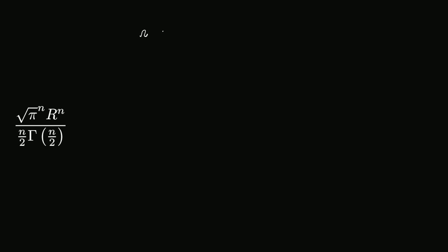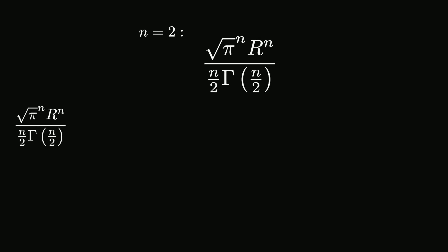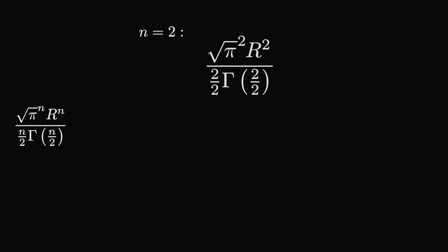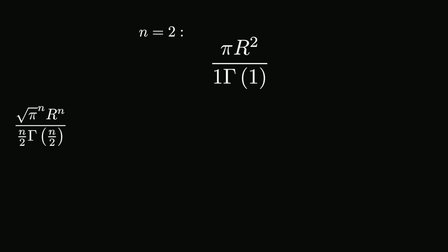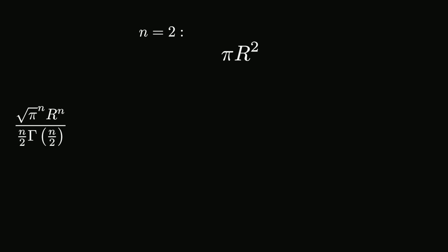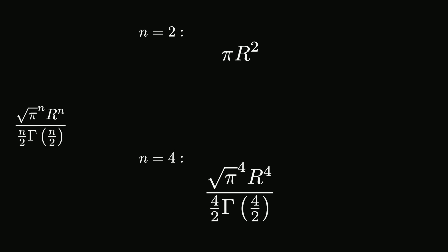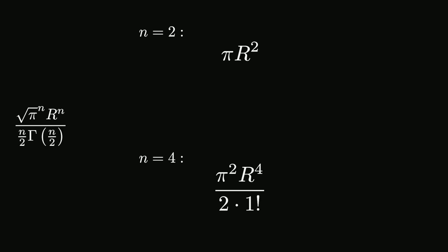Substituting n equals 2, we get the square root of pi squared multiplied by r squared divided by the gamma function at input 1, which equals pi times r squared divided by 1 — or the area of a circle. Substituting n equals 4, we get the square root of pi to the power 4 multiplied by r to the power 4, divided by 2 times the gamma function at input 2, resulting in pi squared times r to the power 4 divided by 2, which is the volume of a 4D hypersphere.